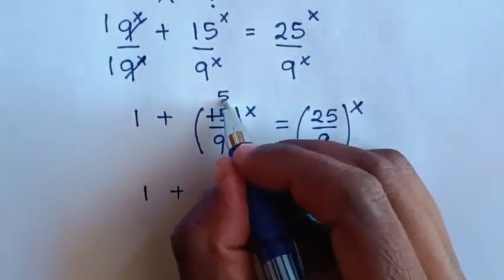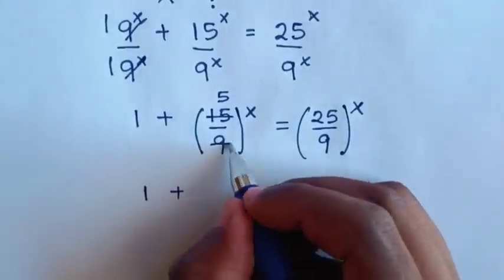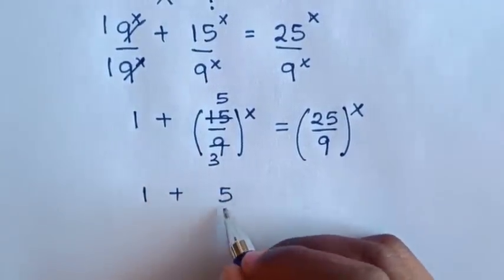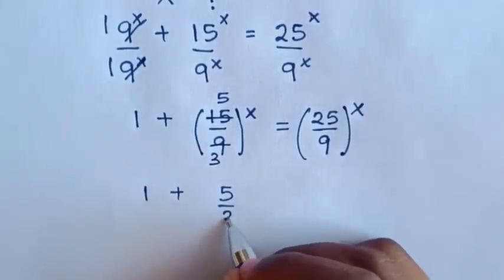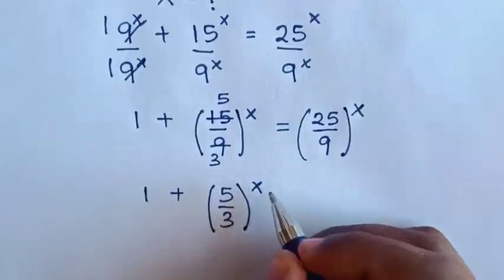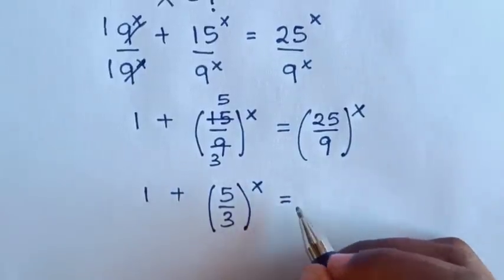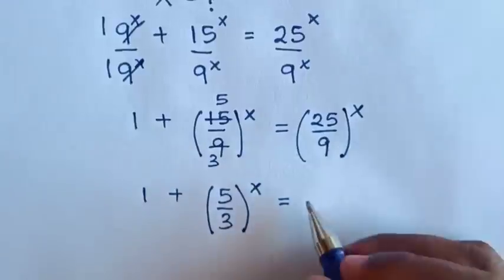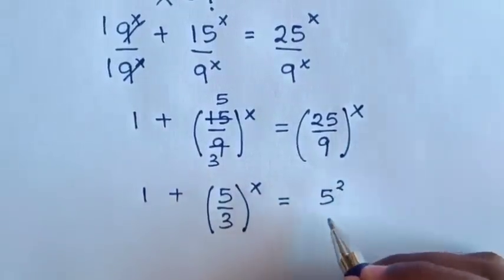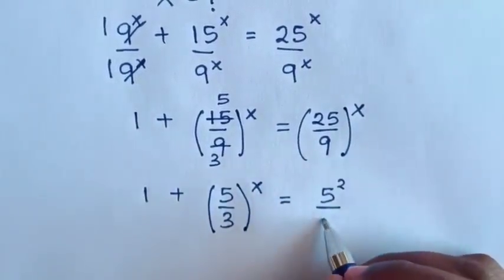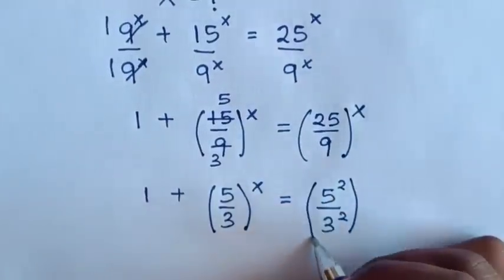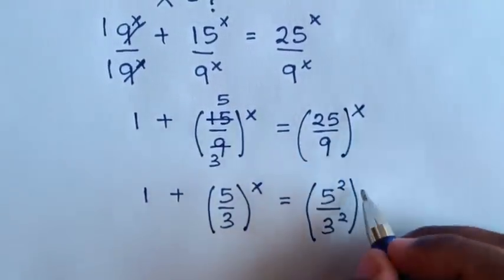Then our equation will be 1 plus — here to simplify: 15 divided by 3 is 5, and 9 divided by 3 is 3 — so it will be (5/3) bracket power of x is equal to — and here 25 is the same as 5 squared over 9, which is the same as 3 squared, bracket power of x.